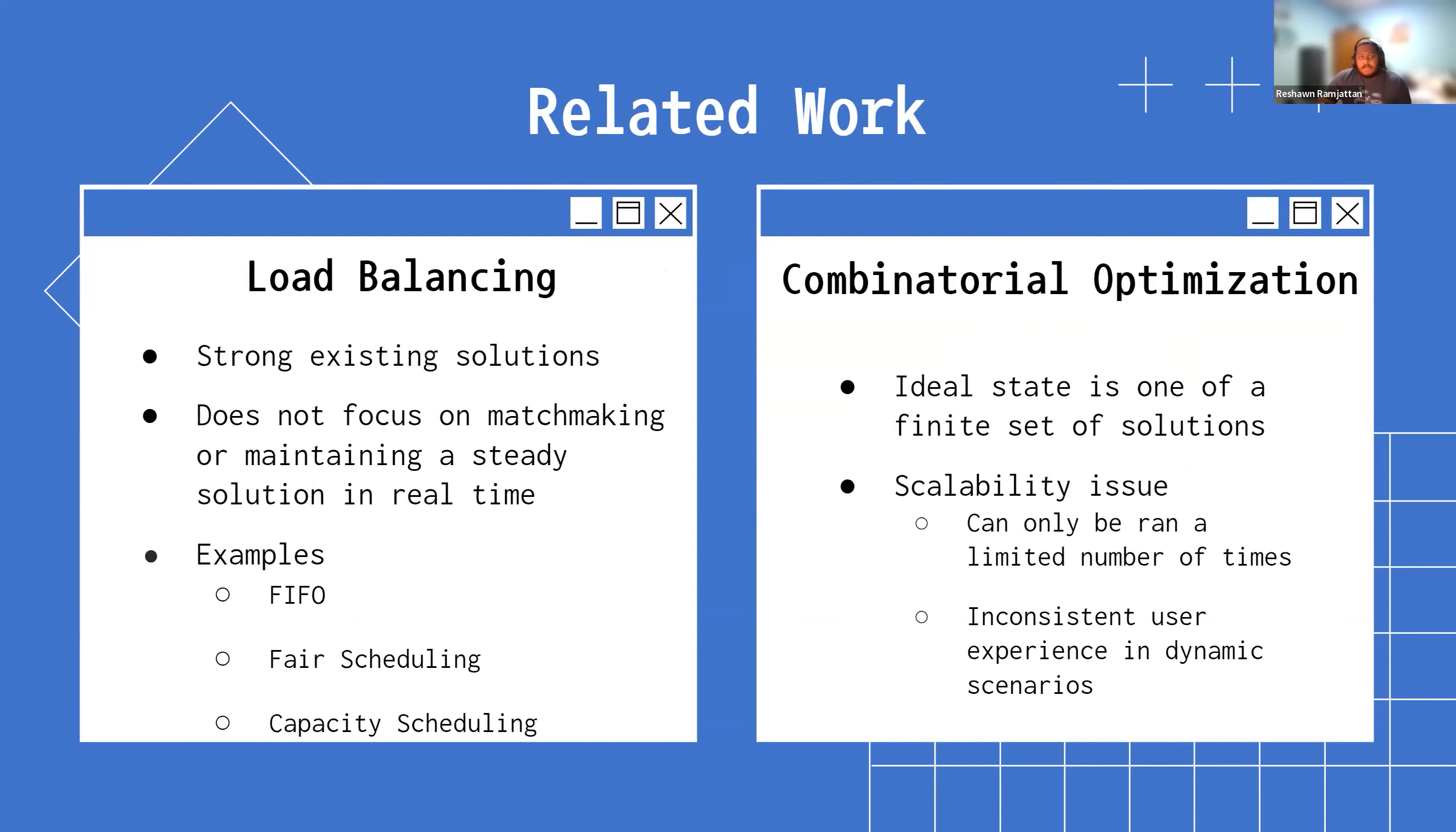If we focus more on the methods side of things, load balancing and especially combinatorial optimization has strong solutions for this type of problem that we have. The challenge comes in when we look at the change that we talked about before, how often would this need to run. When we consider how frequently our system is changing, we would much prefer to have a very good solution all the time than have the perfect solution sometimes.